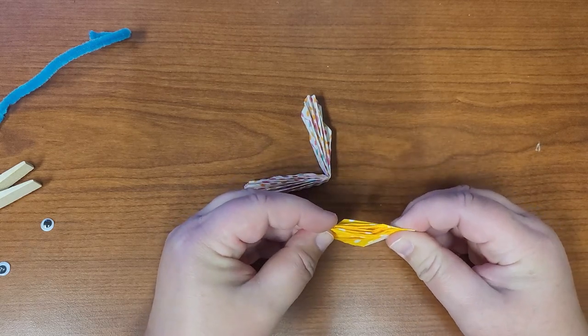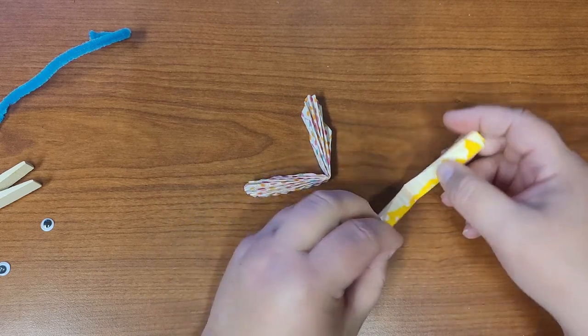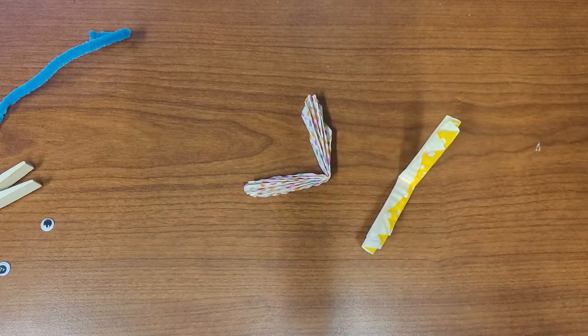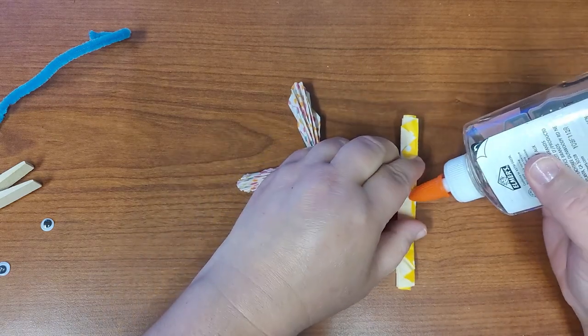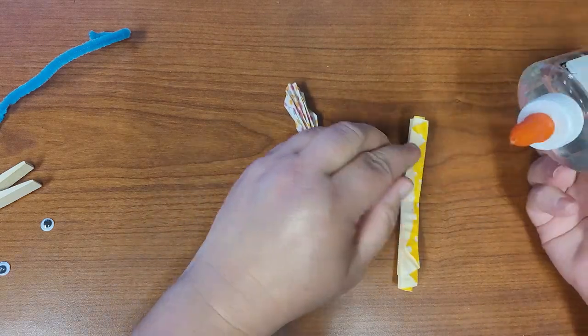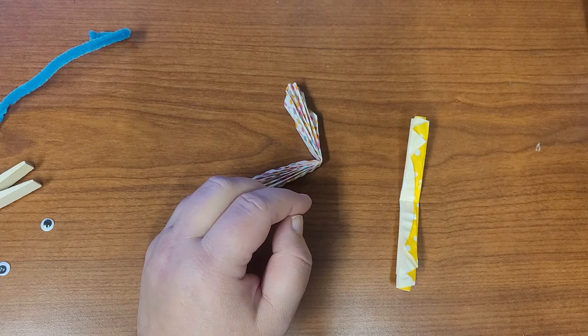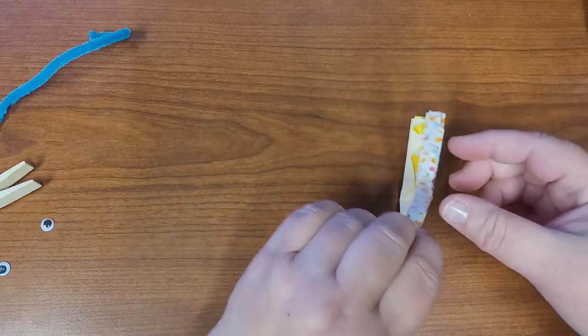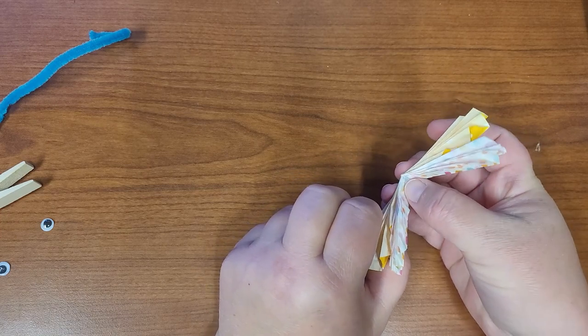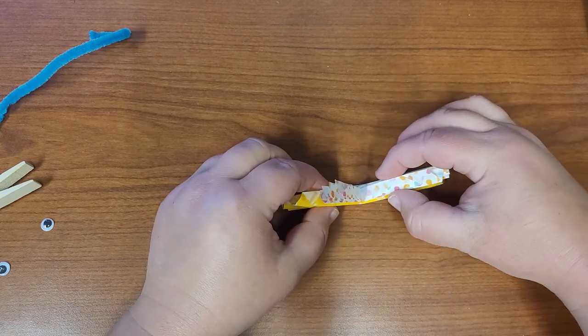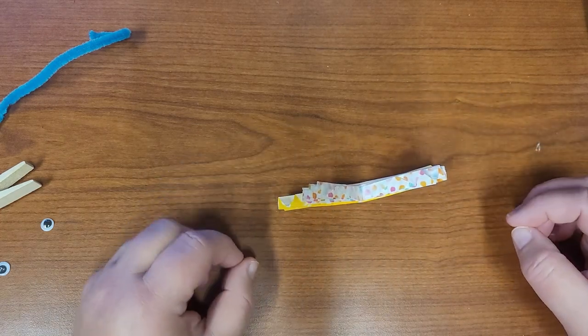All right and then we're going to apply glue on the middle crease of one of the cupcake liners. Don't use too much glue, just a little bit of glue is good. And then we're going to glue the two liners together so you're going to take your other one and put it there.